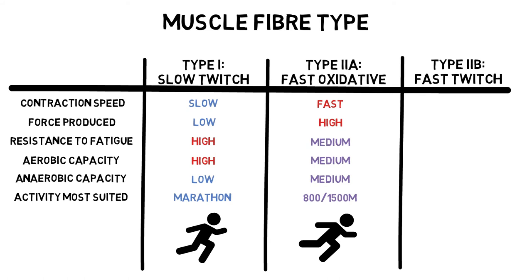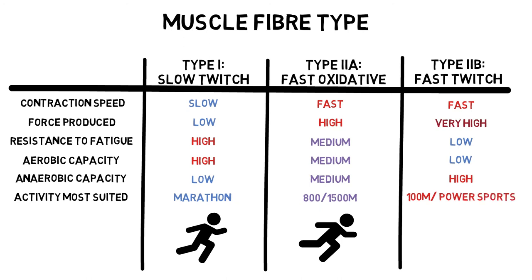Type 2b fibres are all about power. They are quick to fatigue but produce quick and powerful movements, making them perfect for any power-based activities such as the 100 metres sprint.